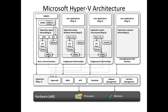The parent partition hosts virtualization service providers, or VSPs, which communicate through VMBus to different child partitions. The child partitions host virtual service consumers, or VSCs, which redirect device requests to VSPs in the parent partition using VMBus. Virtual devices can also take advantage of Windows Server virtualization, named as enlightened IO, for storage, network, graphics, and input subsystems.